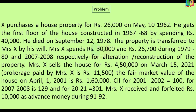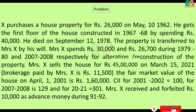Now the problem will be found. X purchases a house property for Rs. 26,000 on May 10, 1962. He gets the first floor of the house constructed in 1967-68 by spending Rs. 40,000. He died on September 12, 1978.